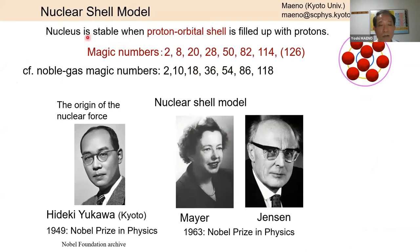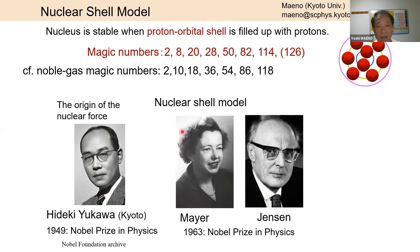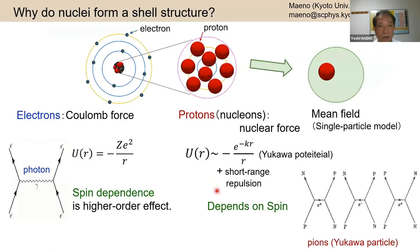In the nucleus there is a similar shell structure. The nucleus is stable when proton orbital shells are filled with protons. These proton magic numbers are slightly different from the noble gas numbers: instead of 2, 10, 18, the proton magic numbers are 2, 8, 20, 28, and so on. The nuclear force was first predicted and explained by Hideki Yukawa at our department, and Mayer and Jensen explained these magic numbers using their shell model, for which they received the Nobel Prize in Physics.